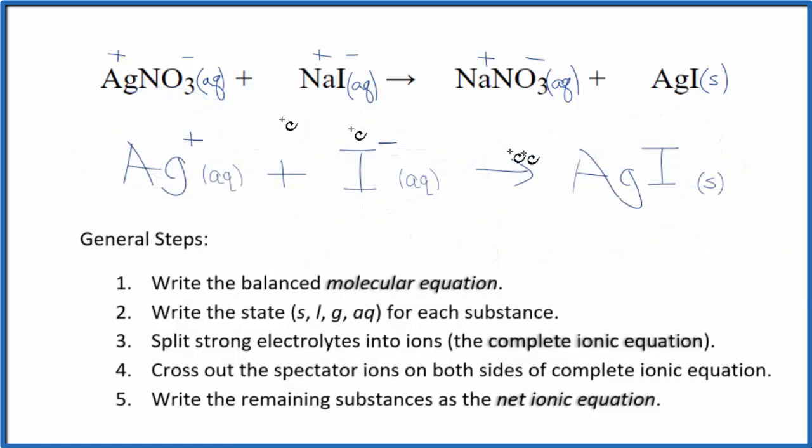And this is the net ionic equation for silver nitrate plus sodium iodide. You'll notice that charge is conserved. We have a positive and a negative, and we end up with a neutral compound.